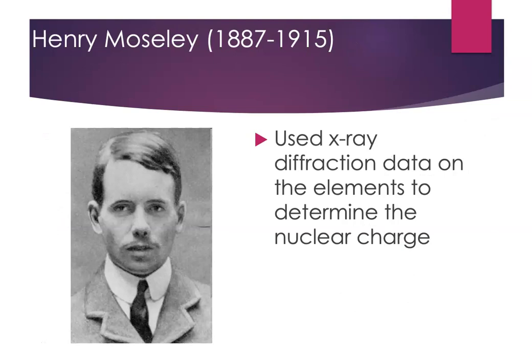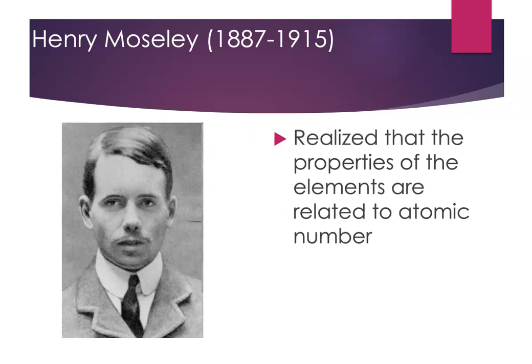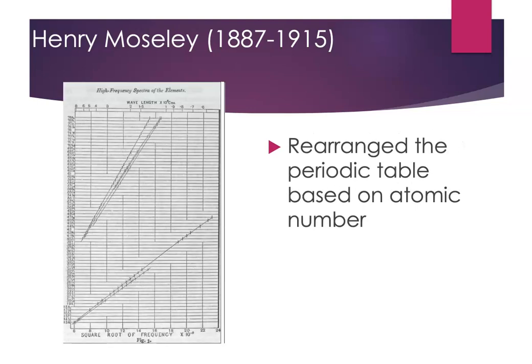Henry Moseley was a British physicist who worked with Rutherford. Moseley's primary contribution was that he looked at x-ray diffraction data of the different elements and examined the nuclear charge. What he found is that the properties of the elements are really related to atomic number — not the masses that Mendeleev was using. The sequence we see is due to atomic number, the number of protons in the nucleus. So the periodic table was rearranged based on atomic number, and those small discrepancies that Mendeleev had introduced based on element properties were all resolved. That's what the modern periodic table is based on.